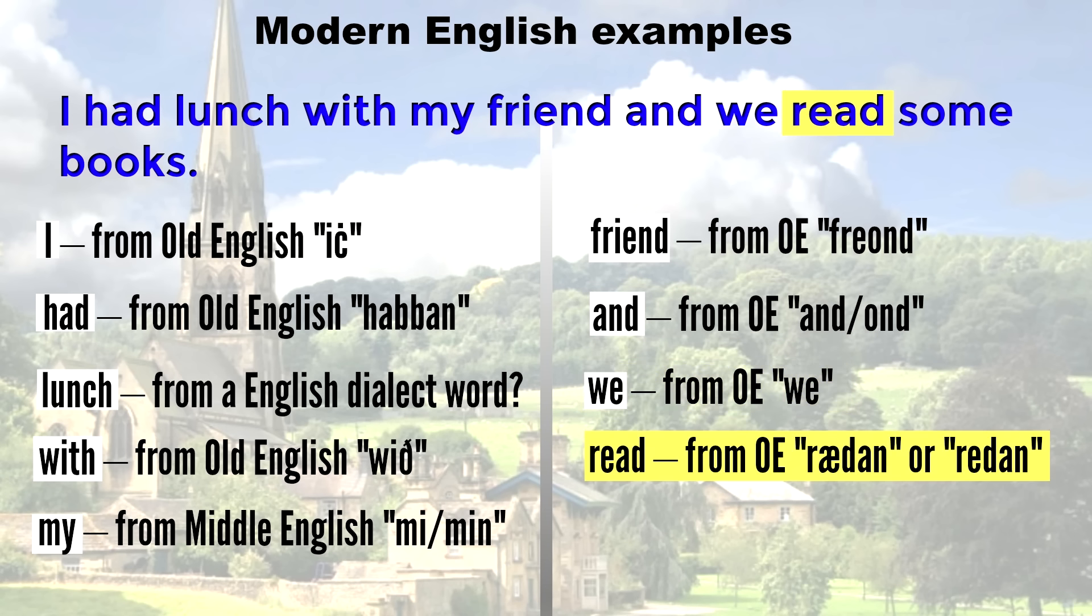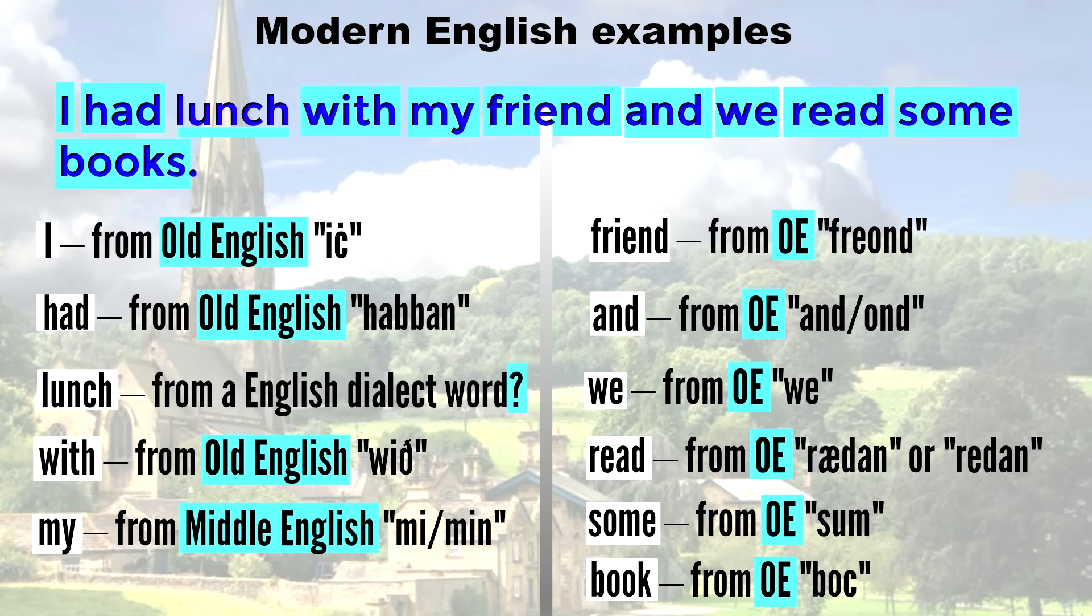We. This comes from Old English we. Read. This comes from Old English radan, or redan. Sum. This comes from Old English sum. Book. This comes from Old English book. So this time, all of the words, or almost all of the words are Germanic.